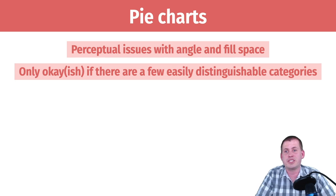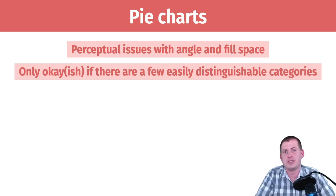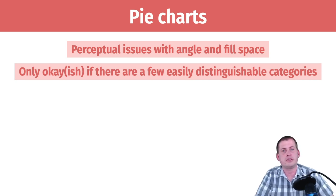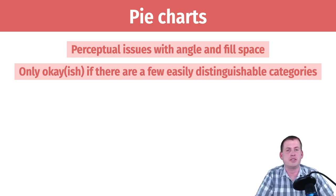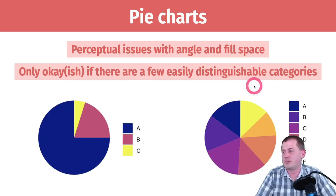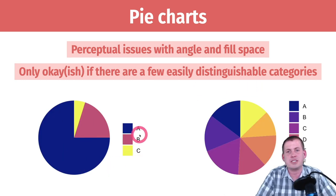And the differences between categories are huge, so it's really easy to tell the difference. If there are too many categories and they're too close to each other in value, it won't be interpretable. Looking at these two examples, the first pie chart is an example of a good pie chart.